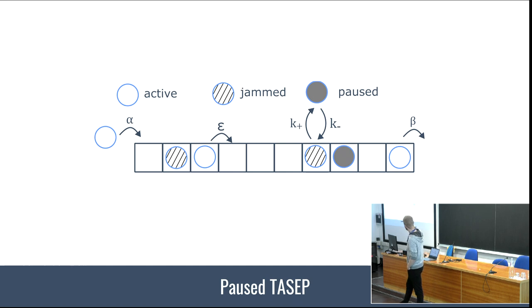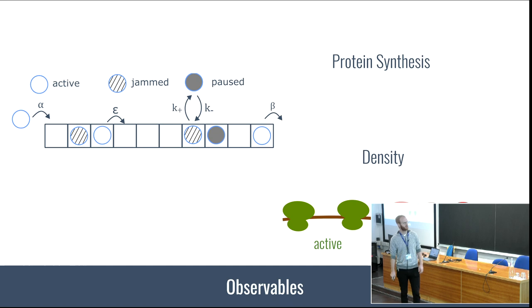I want to clarify what you see on top. For me, active particles are the ones that can actually move. Paused particles are the ones bound by the antibiotic, and jammed particles are the ones that cannot move because of exclusion principles. From this we can get the protein synthesis rate and the density. Here's a small depiction of what active, jammed, and paused particles look like.